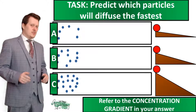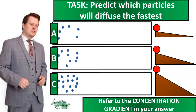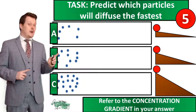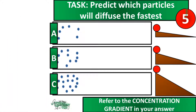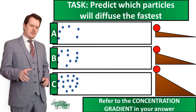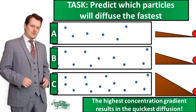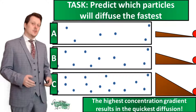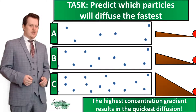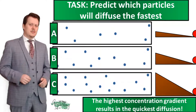Predict which set of particles — A, B, or C — will diffuse the fastest, and refer to the concentration gradient in your answer. Pause the video if you need more time. C diffused the fastest and A diffused the slowest, because C had the largest concentration gradient and A had the smallest. So the higher the concentration gradient, the faster the rate of diffusion.